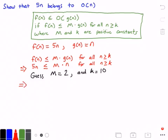And if we do, we get 5 times n is less than or equal to 2 times n for all values of n greater than or equal to 10. All right, so is this true? Well, maybe. We don't know.